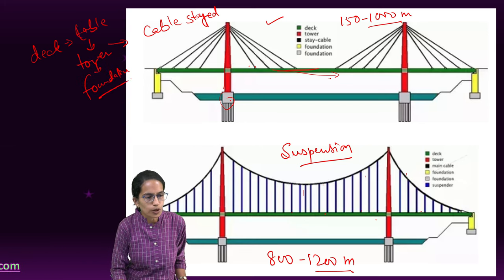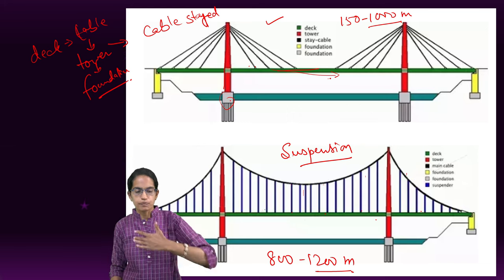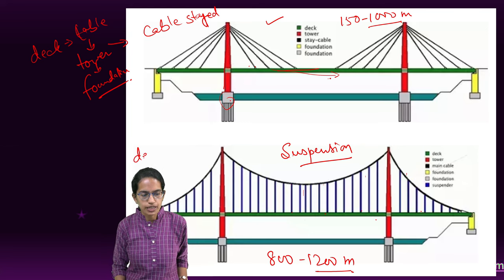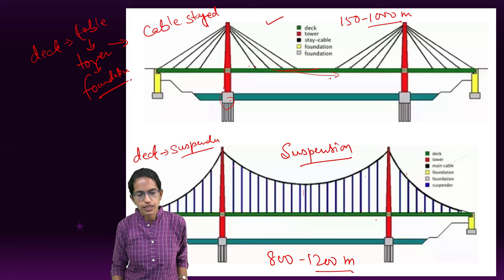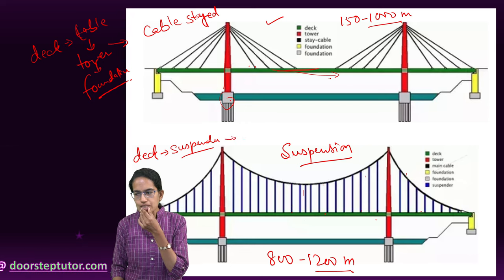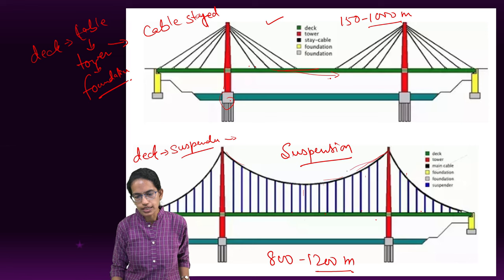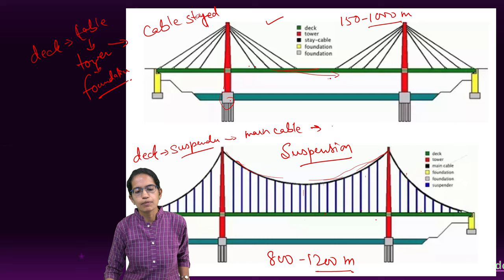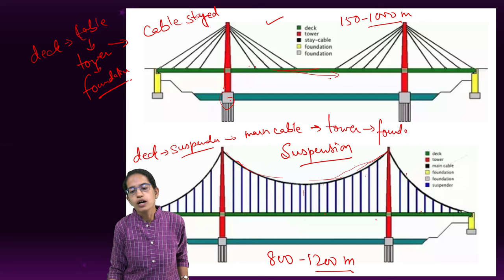But this process would be a little different in the case of suspension bridge. When a vehicle is going on a suspension bridge, the impact or the transmission would first take place on the deck. From the deck it would go to the suspender. Now, what are the suspenders? These lines, the blue lines that you can see here. From the suspender it would go to the main cable, the point which is connecting all these suspenders. From the main cable it would go to the tower, and from the tower it would go to the foundation.